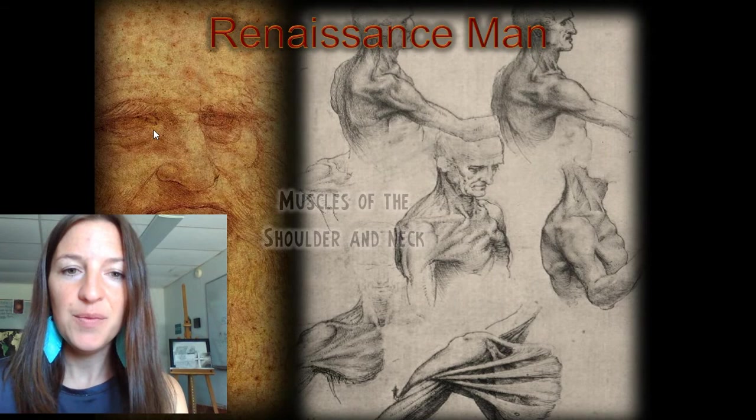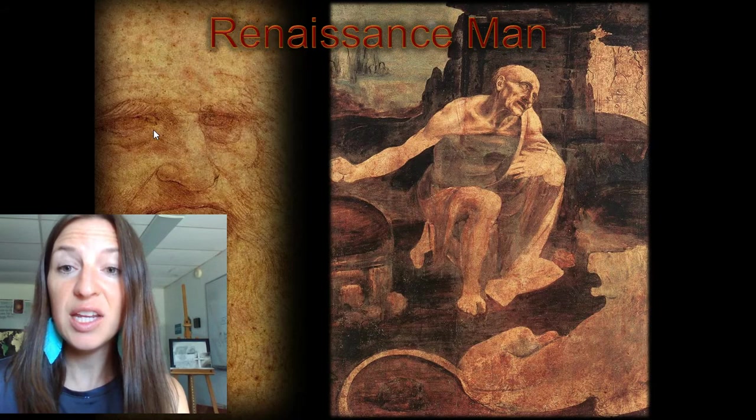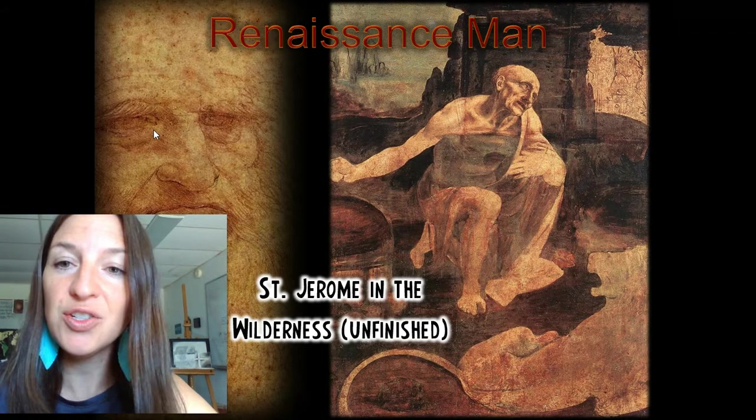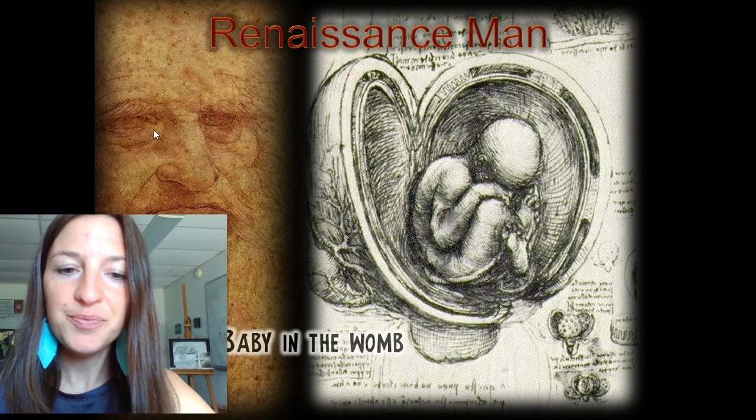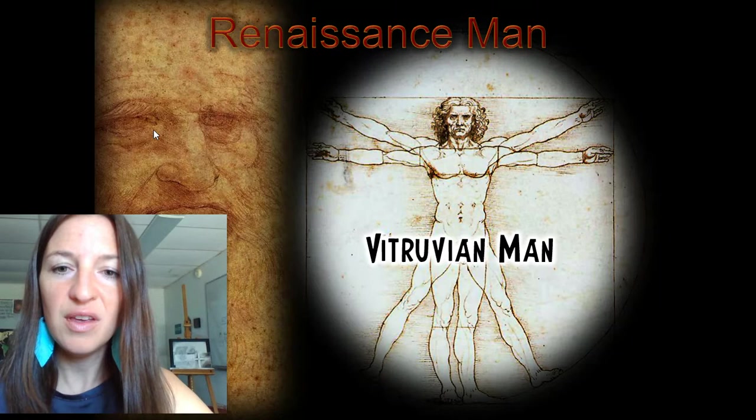He studied anatomy. These are his drawings of the muscles of the shoulder and neck, and he used them to paint St. Jerome in the Wilderness, which was not finished. He also studied how we all begin — babies in the womb — and the Vitruvian Man.